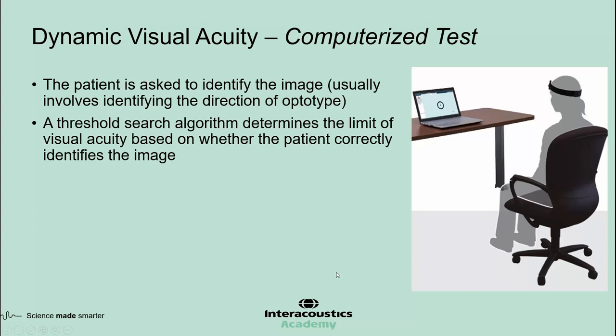During the test, the patient is asked to identify the direction or orientation of the optotype. Very similar to what one goes through during an eye exam, the computer reduces or enlarges the size of the optotype based on whether the patient correctly identifies the direction in the previous trial. A threshold search algorithm determines the limit of visual acuity based on the entire profile of correct and incorrect answers.